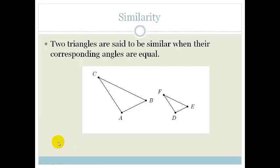So, two triangles are said to be similar when their corresponding angles are equal. In other words, if we've got two triangles,